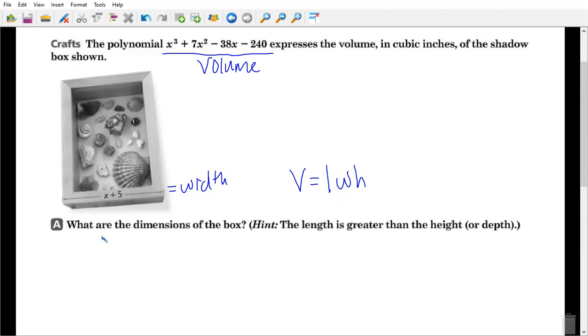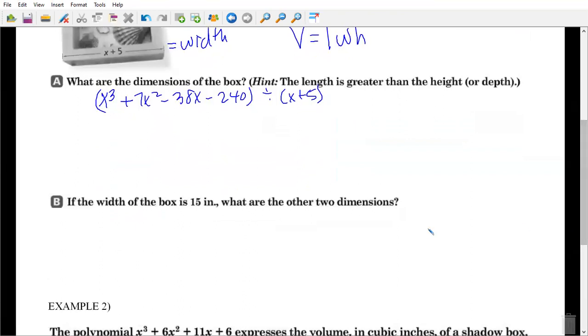At this point, I have the choice. If I'm dividing x cubed plus 7x squared minus 38x minus 240 divided by x plus 5, I have the choice to do long division or synthetic division. The reason why is because this is a linear divisor.